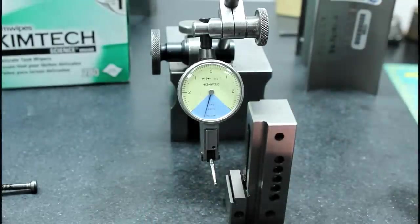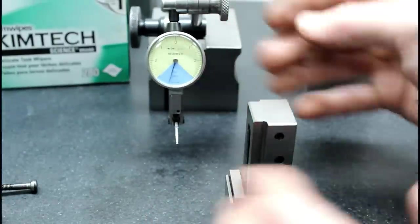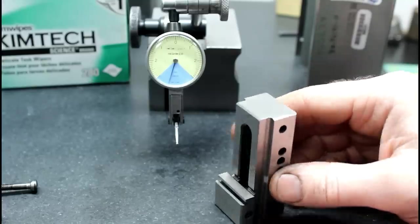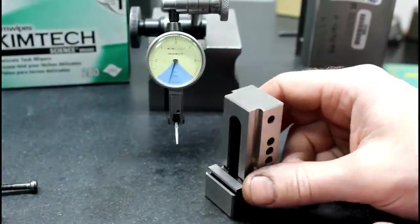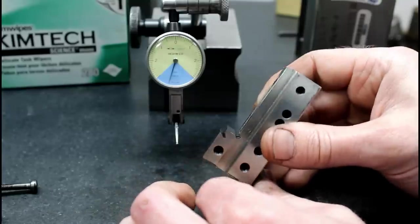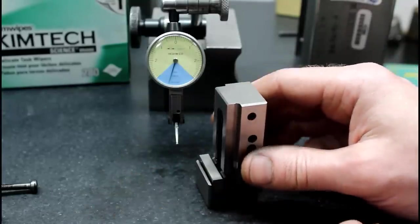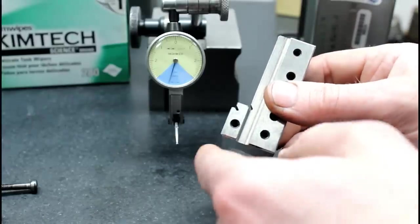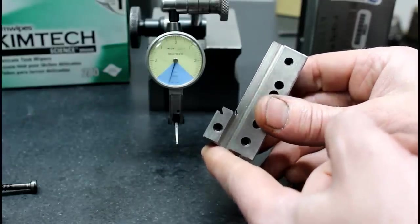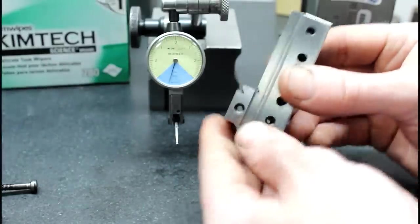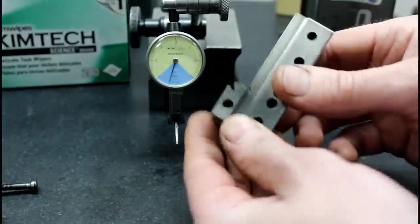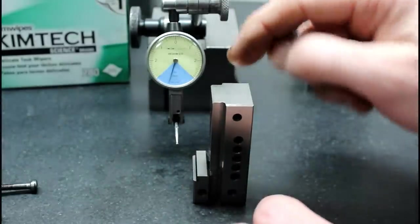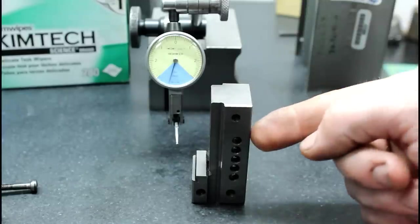Now that we know with a decent amount of accuracy how accurate this thing is, let's see if we can check for square. I know that this surface is parallel with this surface and this surface is parallel with this surface, but I don't know that this surface is square with this surface.